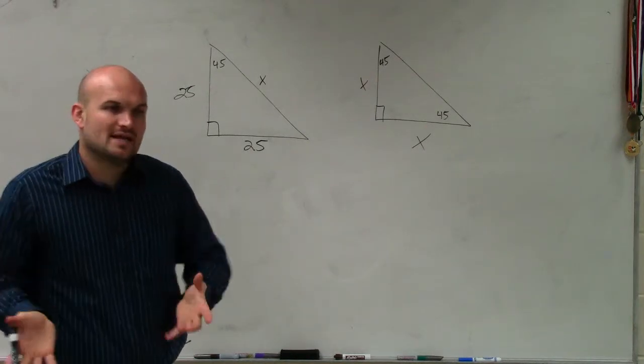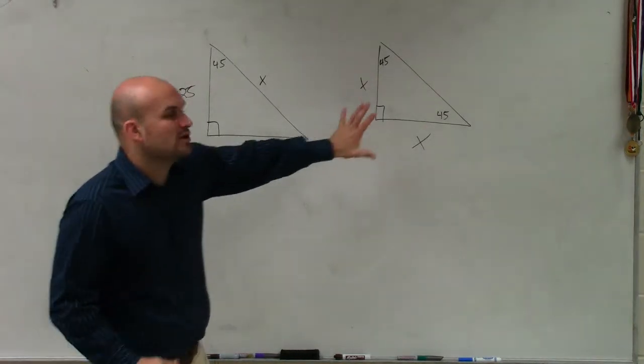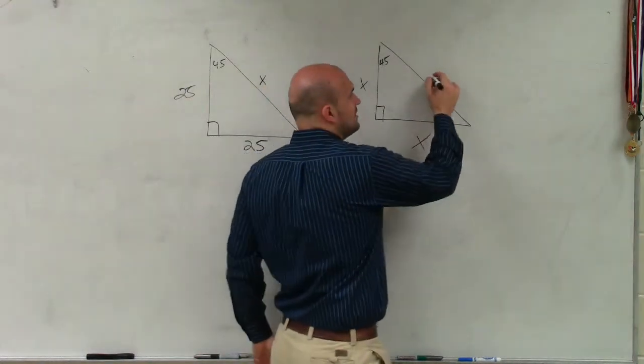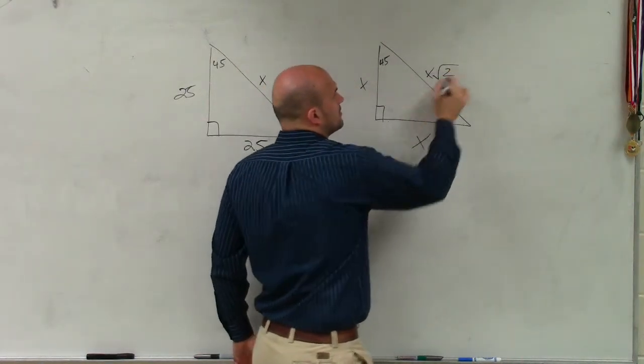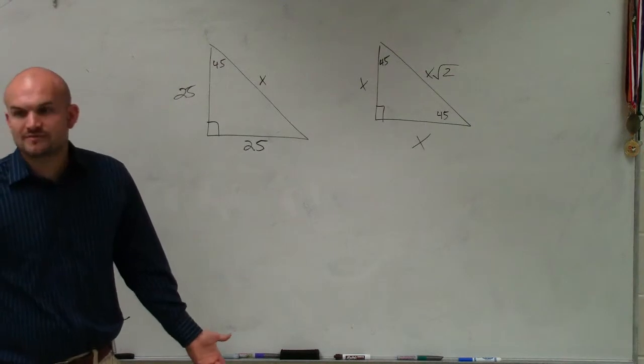Now, how do the two legs relate to the hypotenuse? For a 45-45-90 triangle, what we discovered is that you just multiply it by the square root of 2.